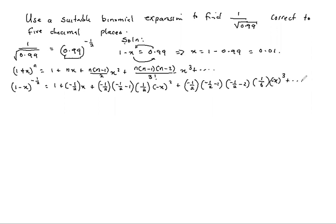So we now simplify. As we simplify, we notice that negative half minus 1 is the same as negative 3 over 2, and then negative half minus 2 is the same as negative 5 over 2.